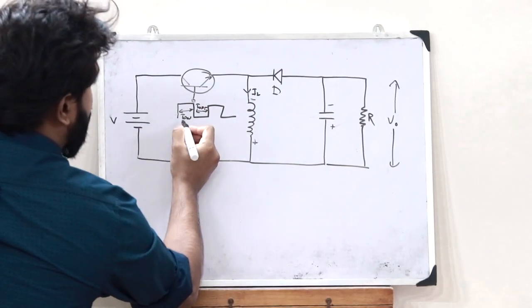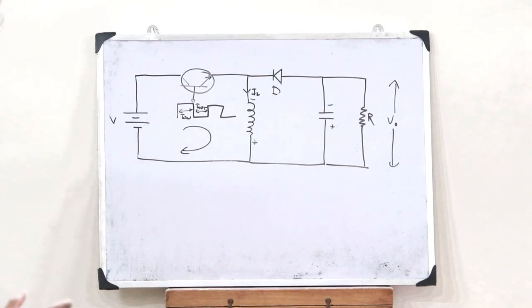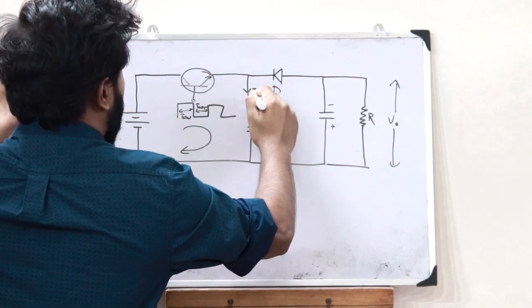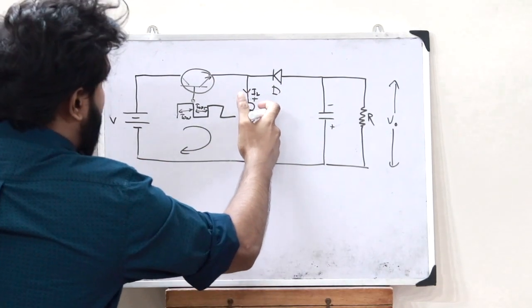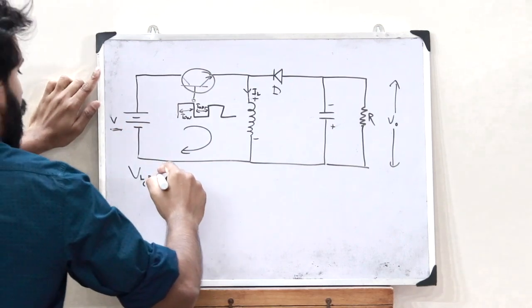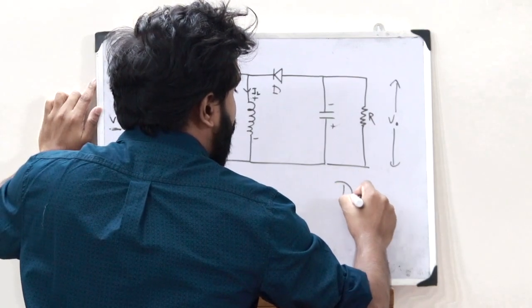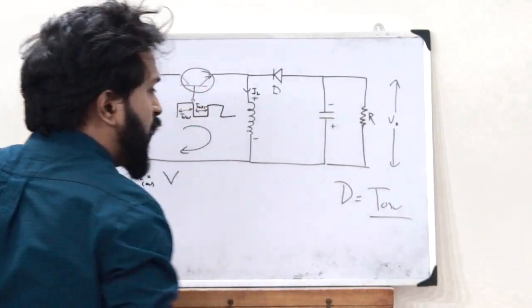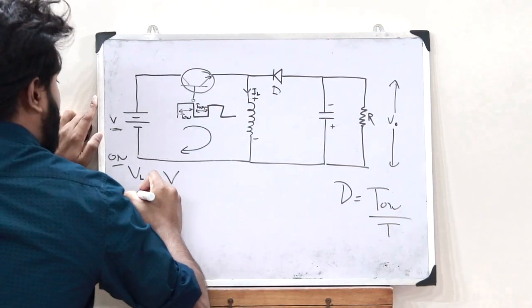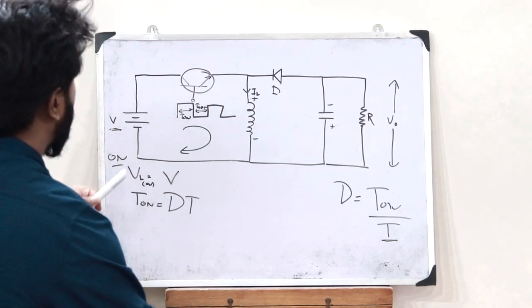During the on condition the current flows through the inductor loop, and the voltage developed across the inductor VL equals the source voltage V. So VL_on = V, and the on-time is D·T. This describes what happens during the on period of the PWM cycle.